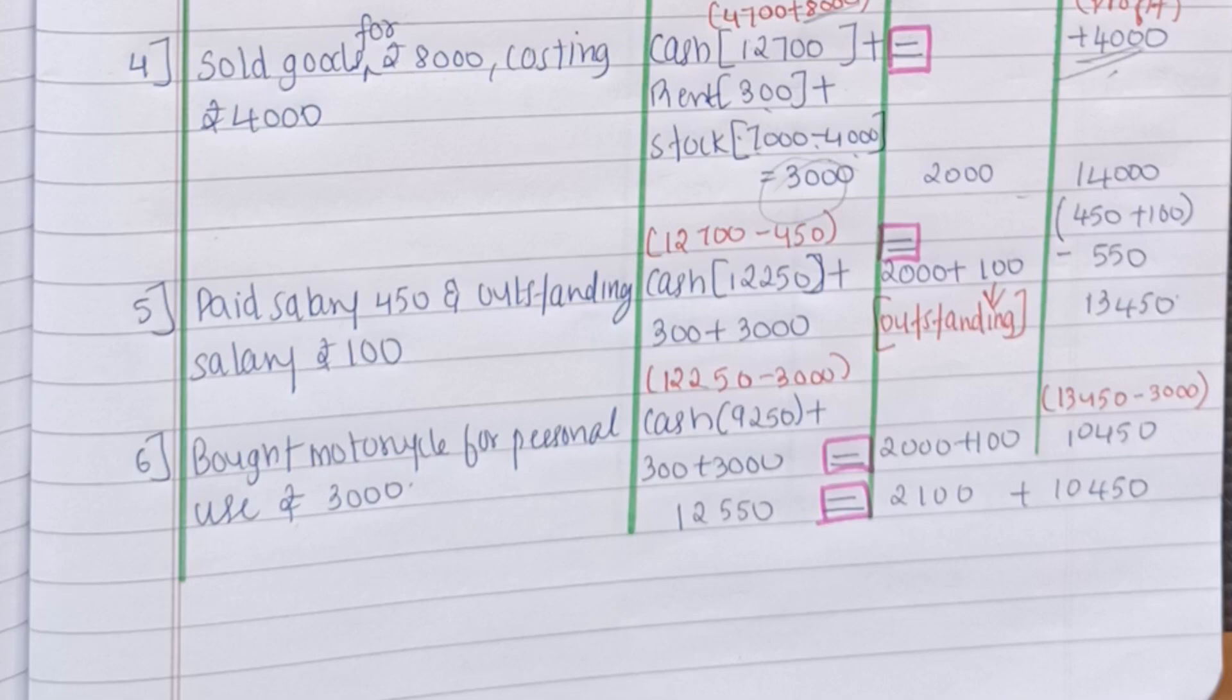Firstly we have to see that paid salary is Rs.450. So we have to deduct it from our cash balance. So our cash balance is Rs.12700 and we have to deduct Rs.450 from it. Then next what we have to do is salary outstanding is Rs.100. So it is a liability to us. So what we have to do is we have to add Rs.100 to the liability side. Why? Because it is outstanding.